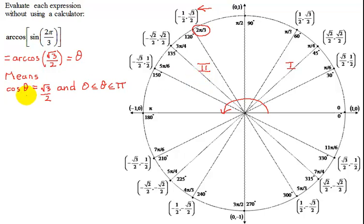So when is the cosine of theta equal to the square root of 3 over 2, and I'm restricted to quadrant 1 and quadrant 2? Since the cosine is positive, I have to be in quadrant 1, because in quadrant 2 all the cosines are negative. Notice all the x values are negative.